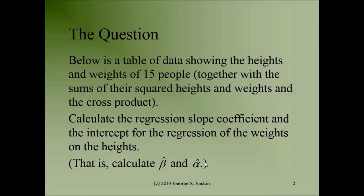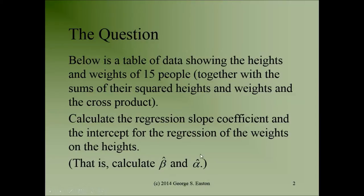The question is: below is a table of data showing the heights and weights of 15 people — and in addition, columns involving the squares of the heights and weights and the cross product. Don't be surprised if the data table is referred to without even mentioning the additional columns. The question then asks: calculate the regression slope coefficient and the intercept for the regression of weights on heights. When something says the regression of weights on heights, it means weights are the y value you're trying to predict, and heights are the x value. We are asked to calculate the fitted slope coefficient beta hat and the fitted intercept alpha hat.